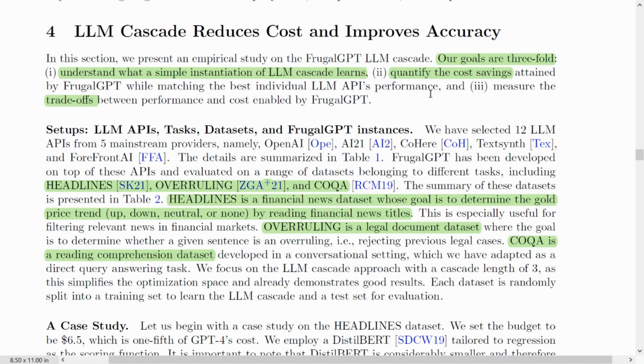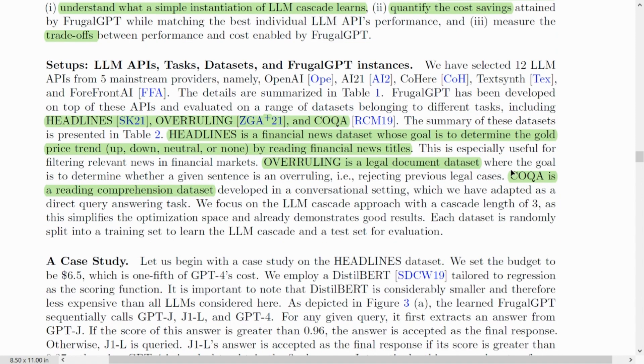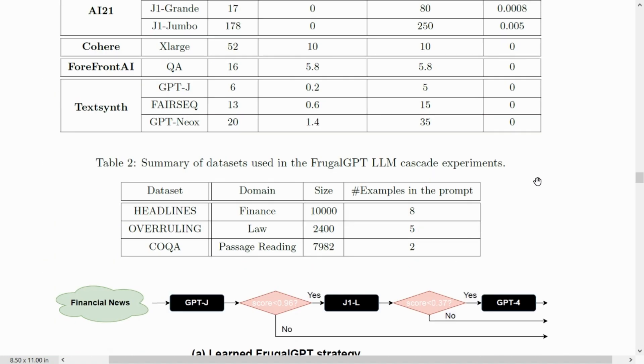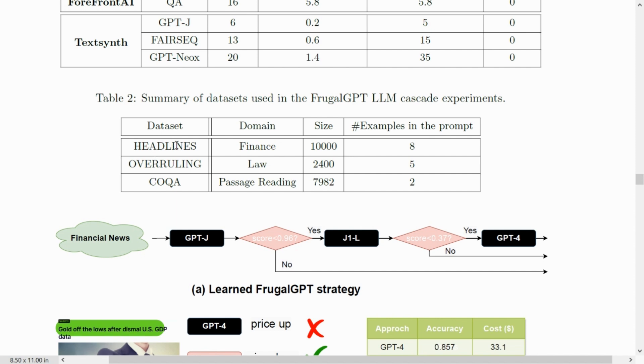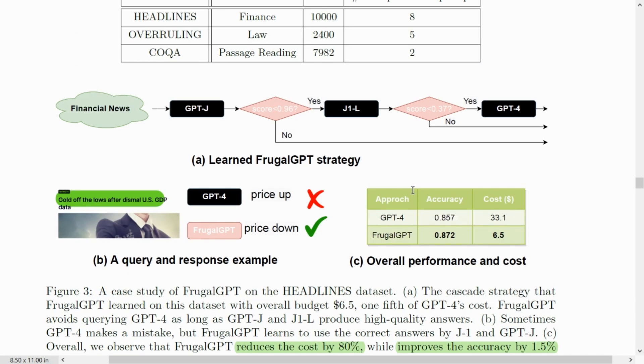There are three goals that have been listed for FrugalGPT-LLM. The first is understand what a simple instantiation of LLM cascade learns. The next is quantify the cost savings attained by FrugalGPT while matching the best individual LLM APIs performance. Then measure the trade-off between the performance and the cost. Regarding the dataset, they have actually used three datasets for conducting this study. The first dataset is Headlines, which is a finance dataset. The next dataset is Overruling, which is a law dataset. The next is COQA, a passage reading dataset. Using these three datasets, they have experimented and found the accuracy of FrugalGPT and found that there is substantial cost reduction.